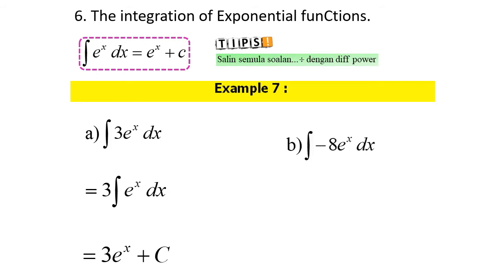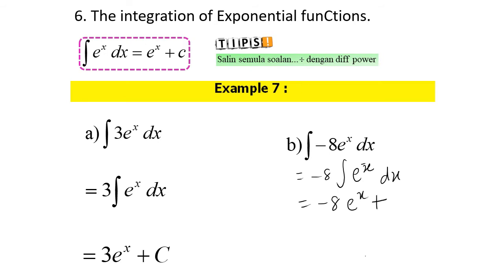Next, for part B, first we have to factorize negative 8. So it should be equal to negative 8 times the integral of e^x dx. It will be negative 8e^x plus c.